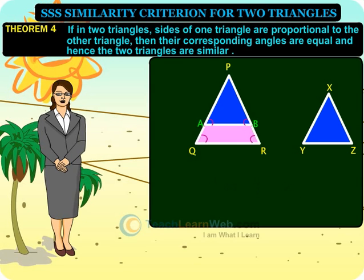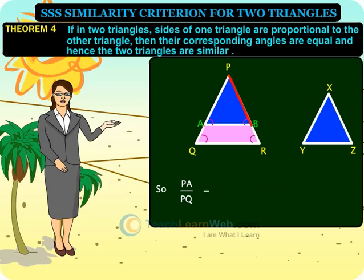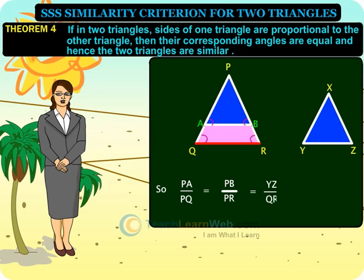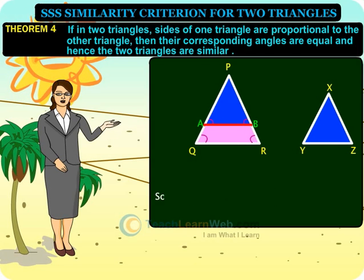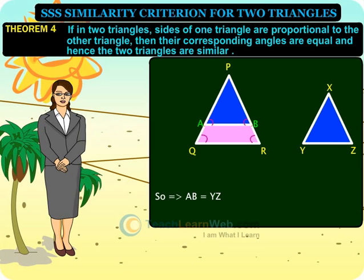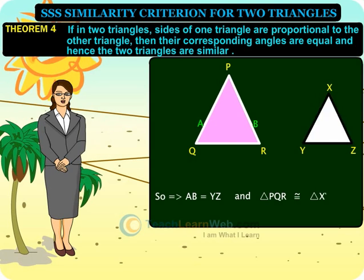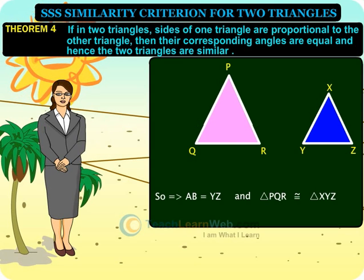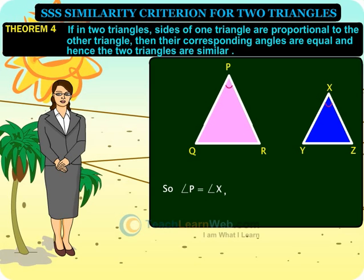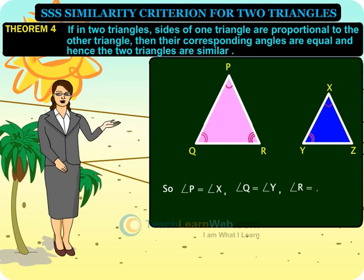So PA/PQ equals PB/PR equals YZ/QR. Therefore AB equals YZ. Angle P equals angle X. Thus triangle PQR is congruent to triangle XYZ. So angle P equals angle X, angle Q equals angle Y, and angle R equals angle Z.